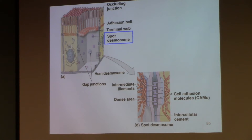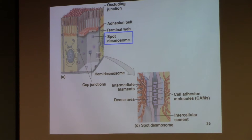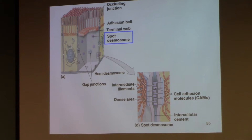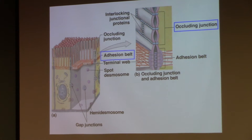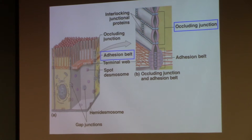Think about when you build a house or a room — you have the frame, then drywall. How do they anchor the drywall to the frame? They nail it — those little nails at various parts of the drywall. This looks like drywall, and those are my nails that hold the drywall to the frame. It's a spot where the cell is anchored to its neighboring cell, using the same idea as an adhesion belt, except the belt goes all the way around, while this is just a spot. They're made of the same things.